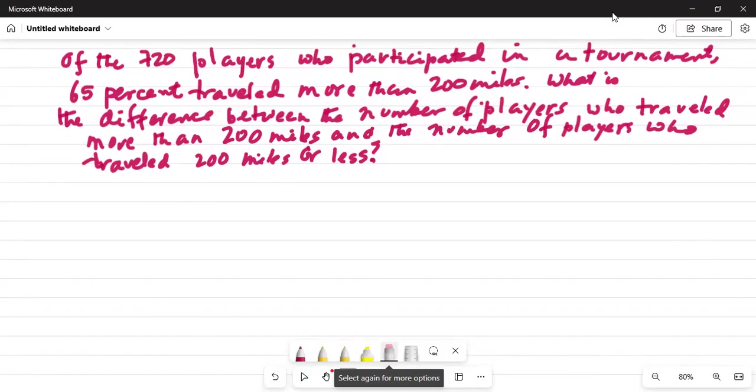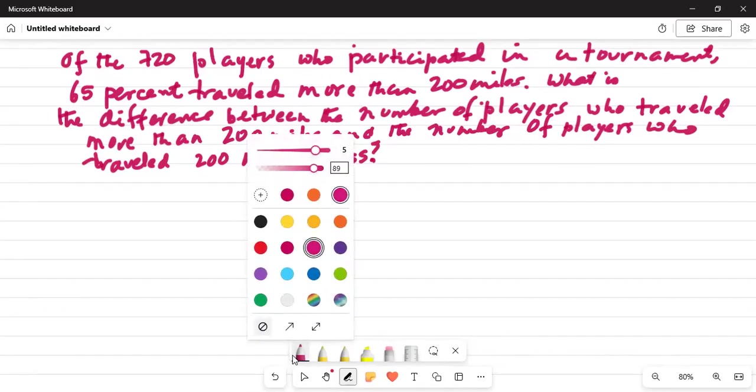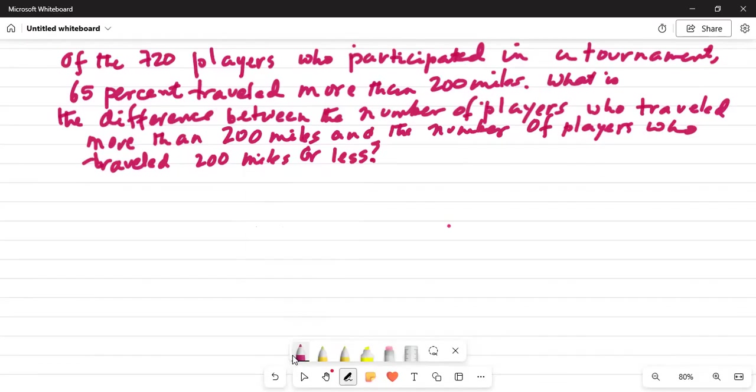You see, there are two different percentages here. One is what they have given to us, which is 65% who traveled more than 200 miles. And another which they have not given to us, which will be the complement, will be 100 minus 65, which is 35% who traveled 200 miles or less. So, let's write those two things up.